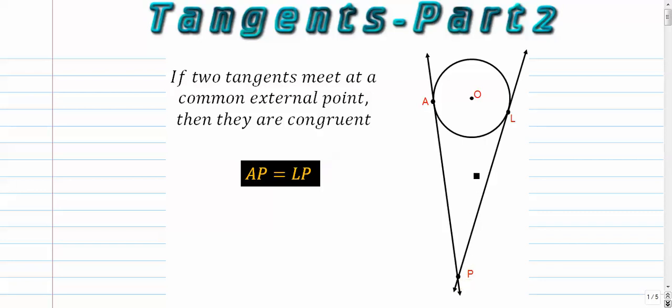When that happens, something very interesting occurs: this segment and this segment are exactly the same. The rule is, if two lines are tangent to the same circle, if they meet at a point outside the circle, then they are congruent. So if that's eight inches, so is this.